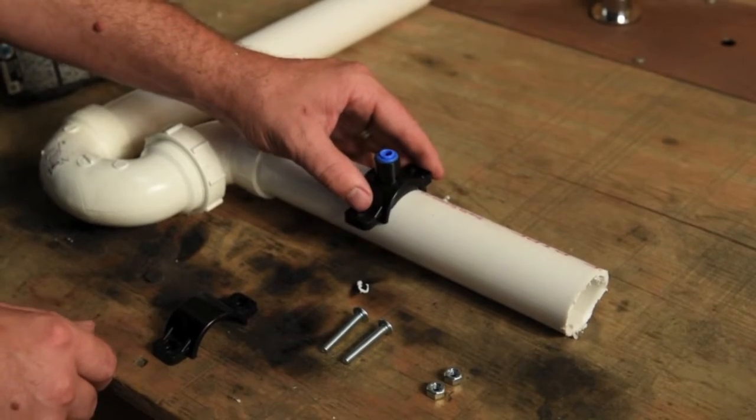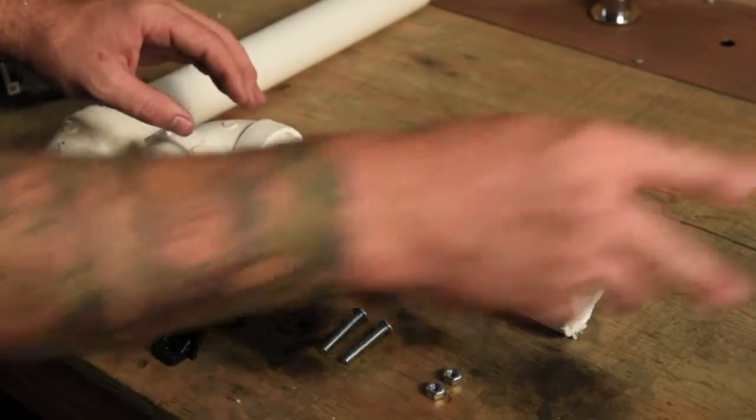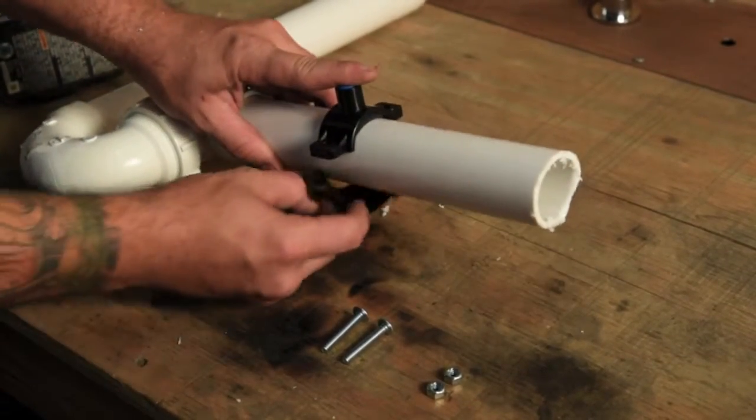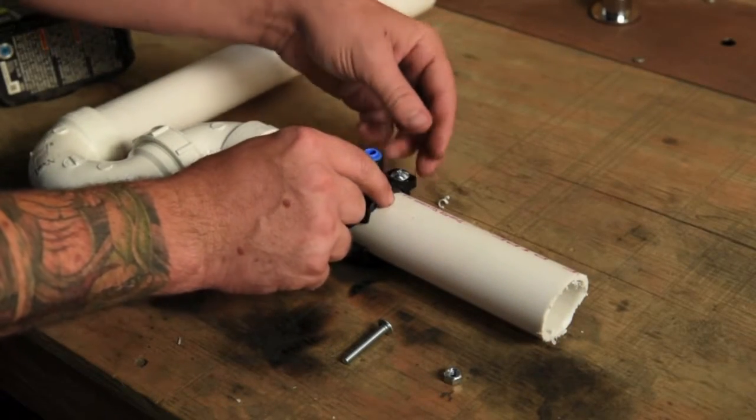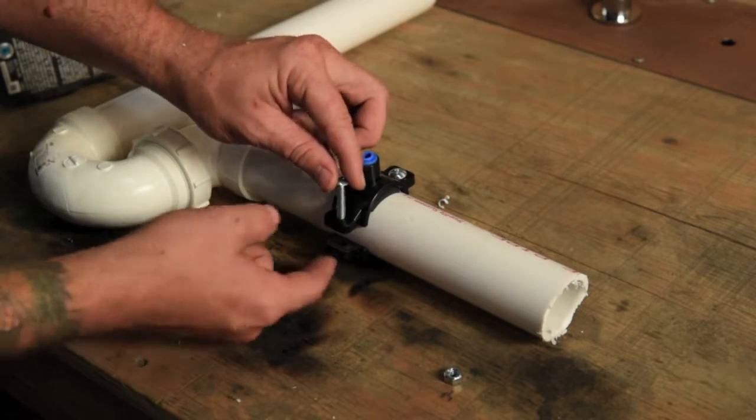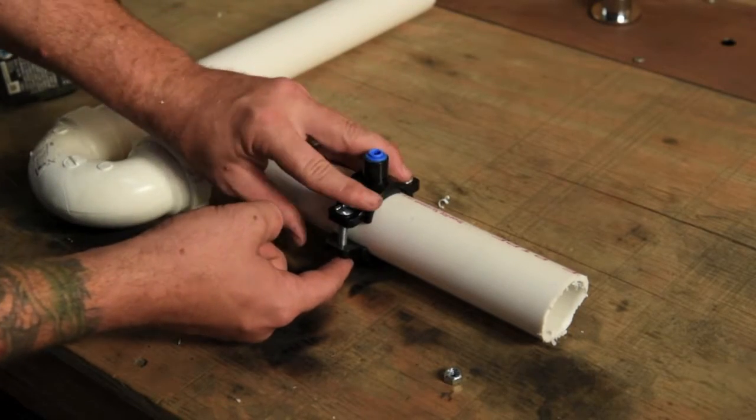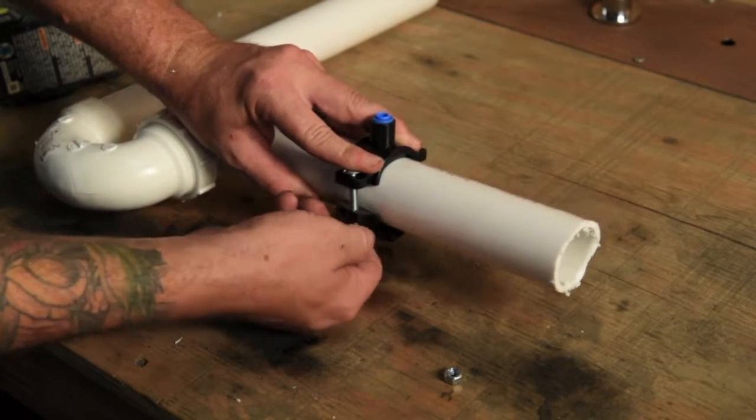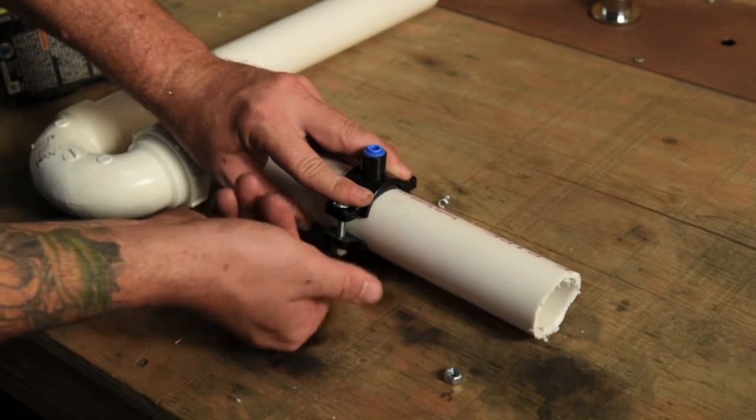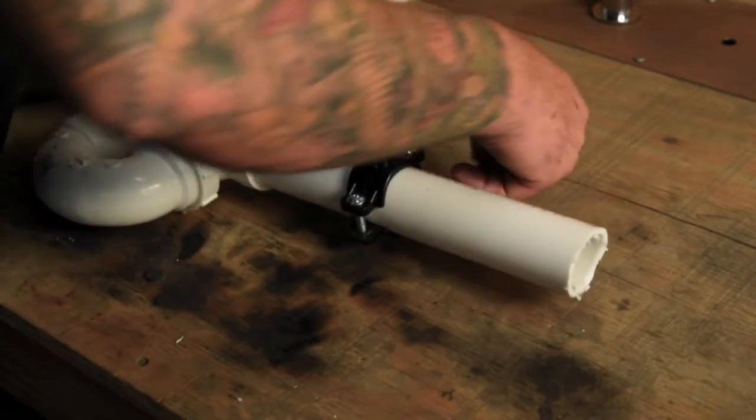Next place the saddle drain on the pipe. Place the receiving end of the saddle on the other side of the pipe, thread the bolts through, and then hand tighten the nuts to the bolts. Be sure to keep the top part of the saddle drain in line with the styrofoam so that your holes match up.